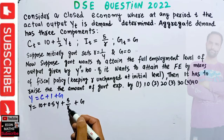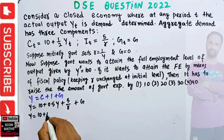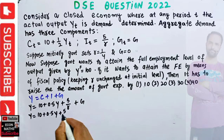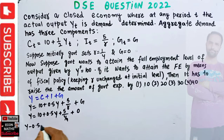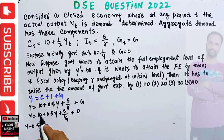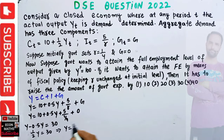Let's substitute the values: r = 1/4 and g = 0. So y = 10 + 0.5y + 5/(1/4) + 0. Transposing: y − 0.5y = 10 + 20 = 30. This gives us (1/2)y = 30, which implies the equilibrium or actual output y = 60.